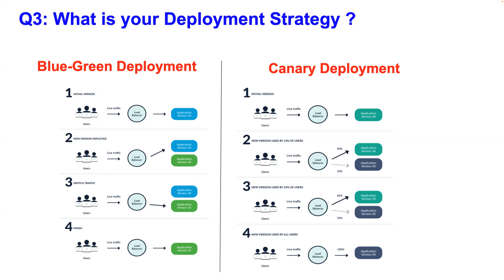You can talk about popular deployment strategies like blue-green deployment or canary deployment. To explain blue-green briefly: if you look at the diagram, you already have an application at version 34 and you are deploying a new version 35. First, your load balancer points to application 34 deployed on your cluster, then you install application 35 on the same cluster using your CI/CD pipeline.